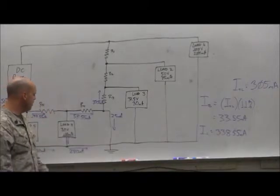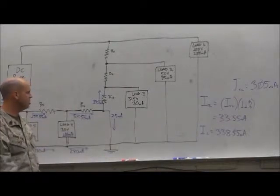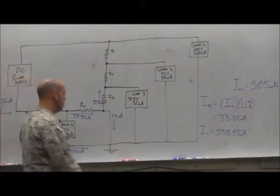Now, at this node right here, we had 280 milliamps coming in, 25 milliamps coming in. How much goes out? 305 milliamps.